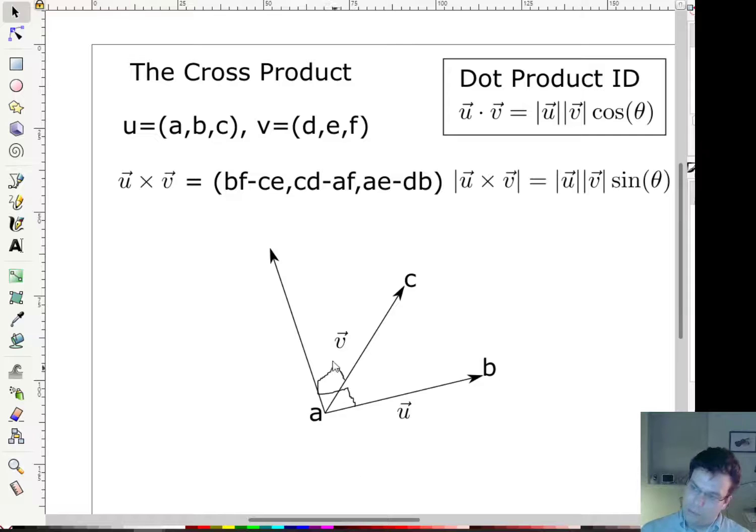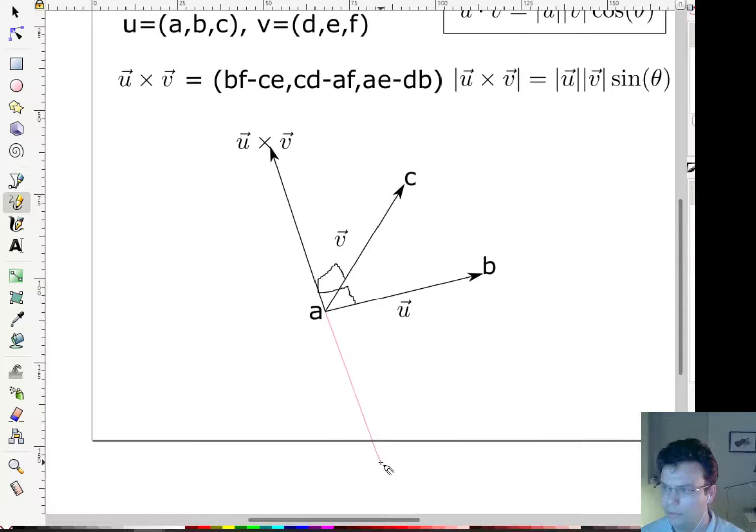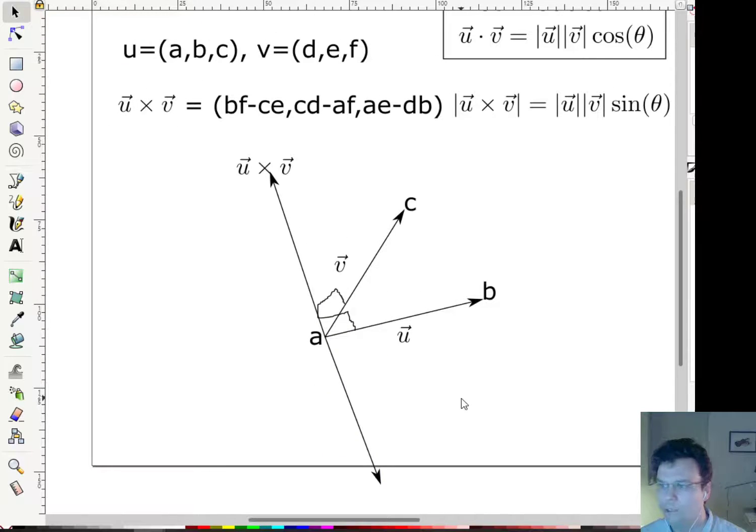All right, so that's perpendicular, this u cross v. And it has the magnitude of the area of the parallelogram spanned by those two vectors. So now I know a lot. But hang on a second. So there's another vector I could choose that's perpendicular to both of these, right? And that has that magnitude. I could also choose the reflection, right? This is still perpendicular to both, and it still has the same length. So how do I know which one to choose?